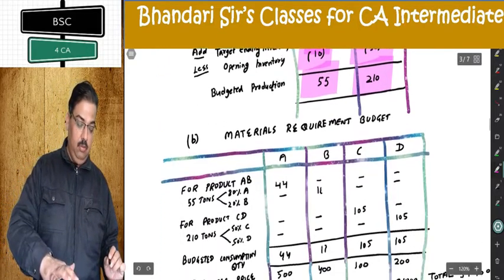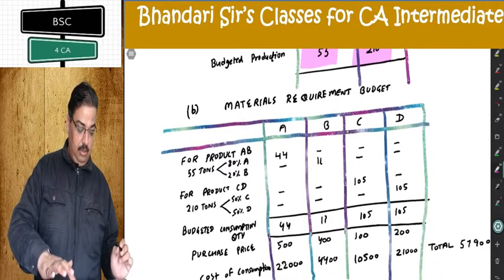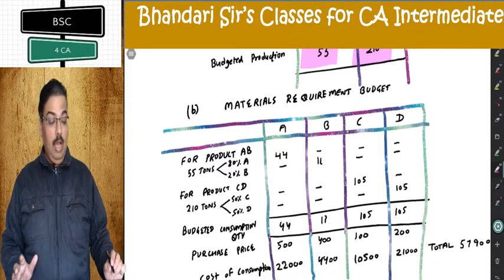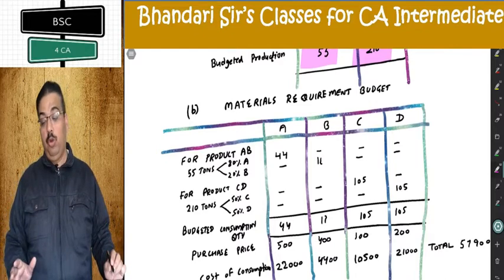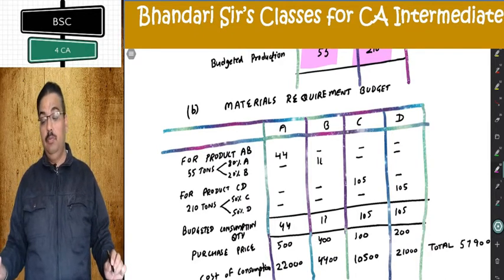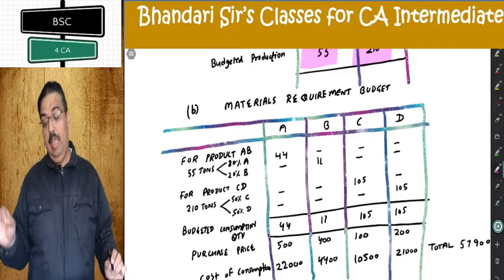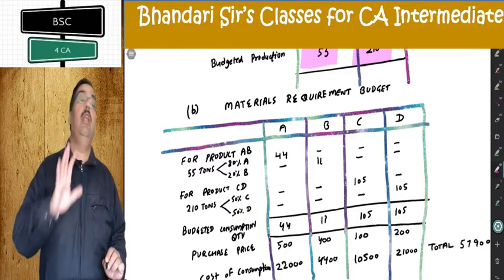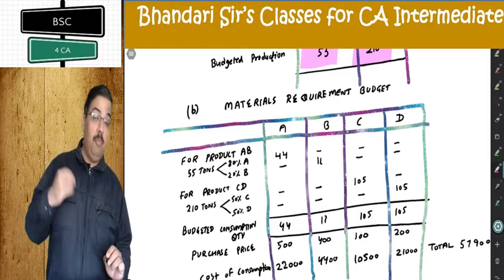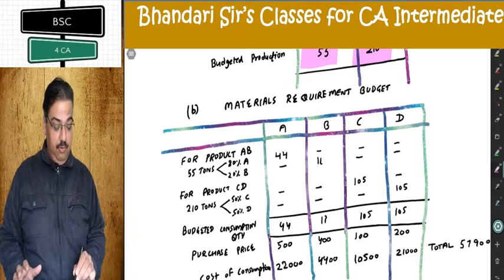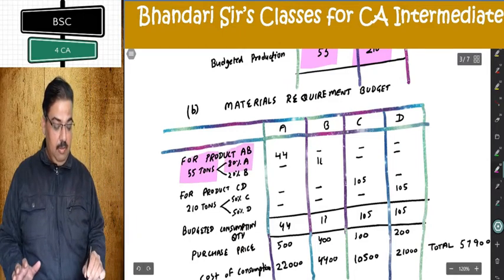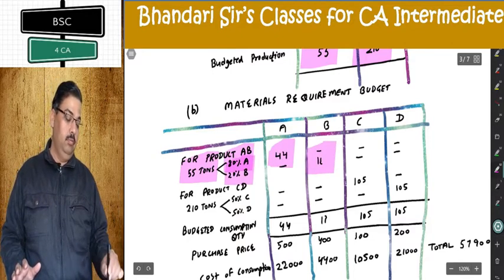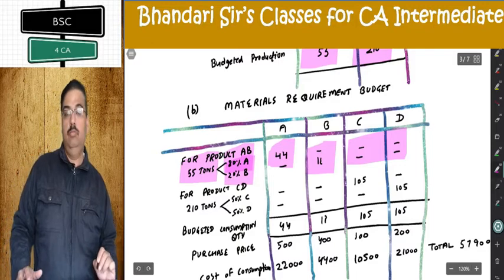Second part: materials requirement budget. Requirement means consumption. I need the input-output ratio given in the first table. For product A, B: material A requirement is 80%, B requirement is 20%, C and D are nil. In making product A, B which is 55 tons, 80% is material A giving 44 tons and 20% is material B giving 11 tons. Nothing for C and D.